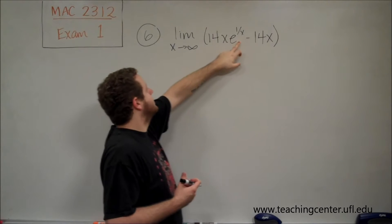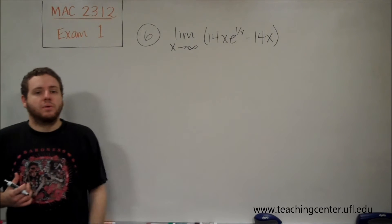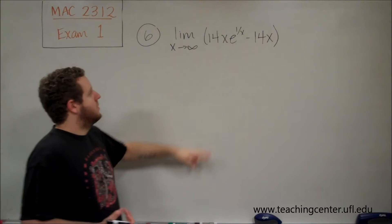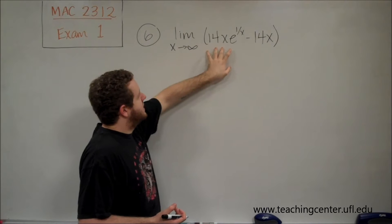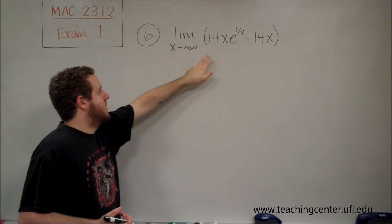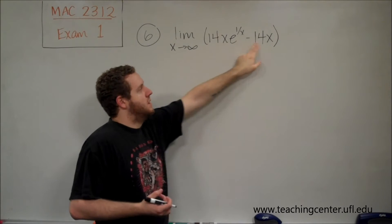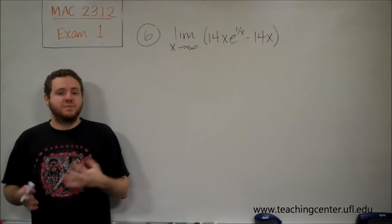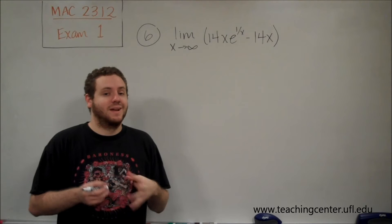If x is approaching infinity, the exponent 1/x, which is 1 over a number approaching infinity, tends to 0. So we'd have e^0, which is 1, and we'd have infinity minus infinity because we have 14 times infinity minus 14 times infinity. Infinity minus infinity is an indeterminate form, so that's not going to be 0.